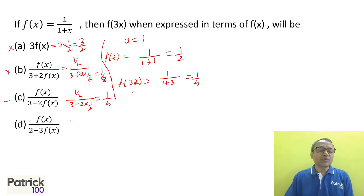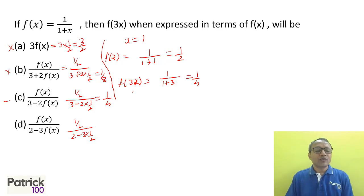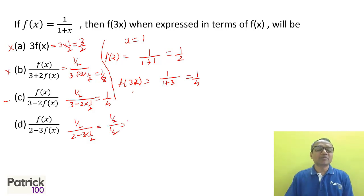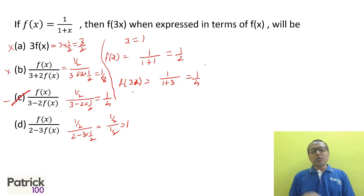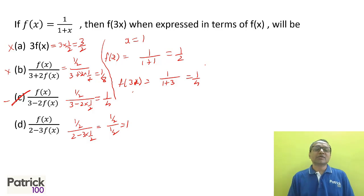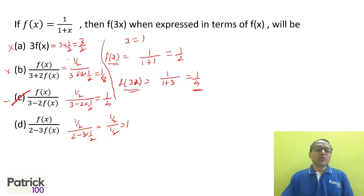Checking option D: 2 − 3·f(x) in denominator gives (1/2)/(2 − 3/2) = (1/2)/(1/2) = 1 — not 1/4. The only option giving 1/4 is C. One of the good ways to solve sums with variables is to substitute simple values and figure out the answer — very useful for a lot of such problems.